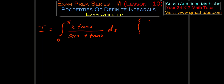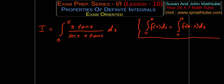If you watched the last videos, you'll understand we are using the property: integral from 0 to a of f(x) dx equals integral from 0 to a of f(a minus x) dx. In the last two videos we did some basic problems, and since you practiced those, you'll find these problems very comfortable. This is in the form 0 to a.